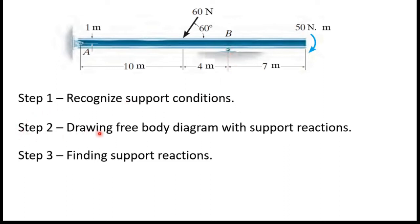Step two is drawing the free body diagram with support reactions. I will show you the complete free body diagram in the next slides. Basically, we mark the support reactions on the supports. If you have a pin support, we mark two force components — one horizontal and one vertical. If you have a roller support, we mark one vertical force component.